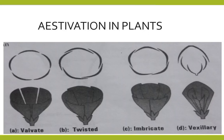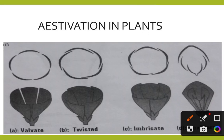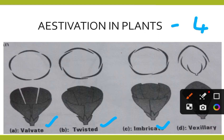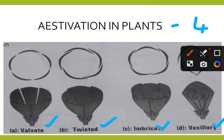Hello everyone, we are discussing aestivation in plants. Aestivation is the arrangement of sepals or petals in a floral bud. Aestivation is of four types: valvate, twisted, imbricate, and vexillary. Let us see them one by one.